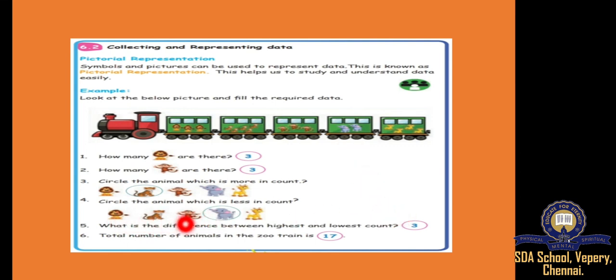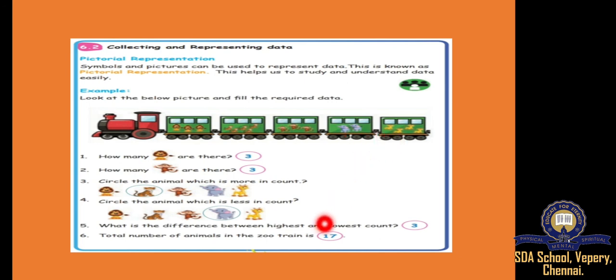Total number of animals in the zoo train: 3 plus 5 is 8, 8 plus 3 is 11, 11 plus 2 is 13, 13 plus 4 is 17. So total 17. Like this, we have to see the pictures and answer the questions.